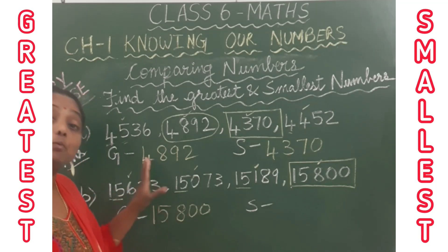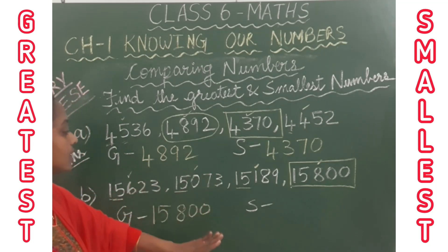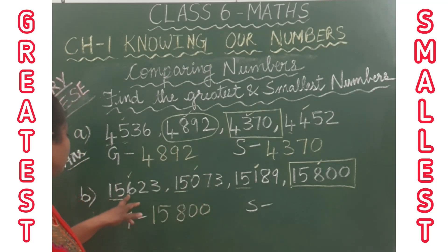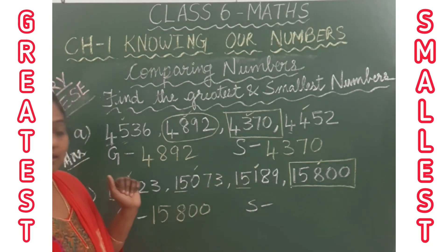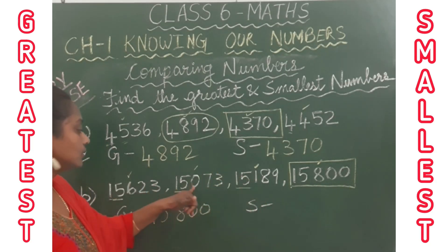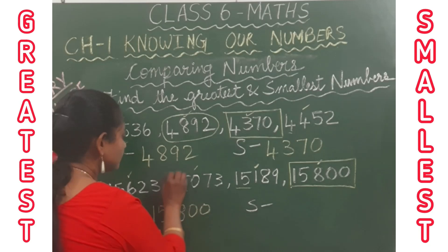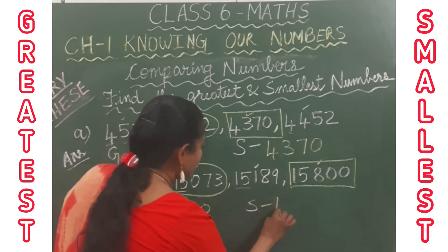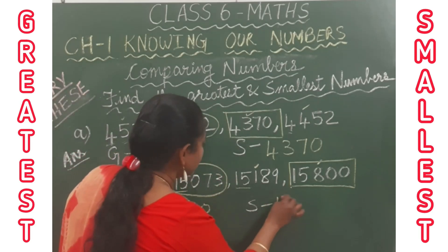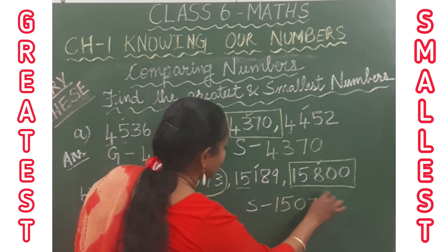Next, we are going to find the smallest number. Looking at the hundreds place digits — 6, 0, 1 — the smallest digit is 0. So 15,073 is the smallest number.